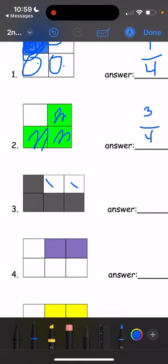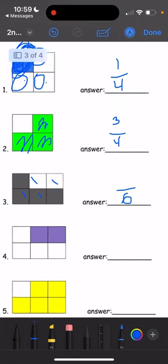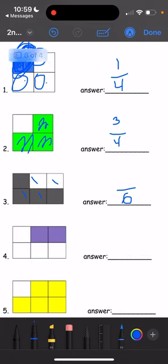1, 2, 3, 4, 5, 6. We have 6 boxes in total, so we know the bottom number is going to be 6. And how many boxes are colored in? 1, 2, 3, 4. 4 boxes are colored gray, so the top number is 4. 4 out of 6.